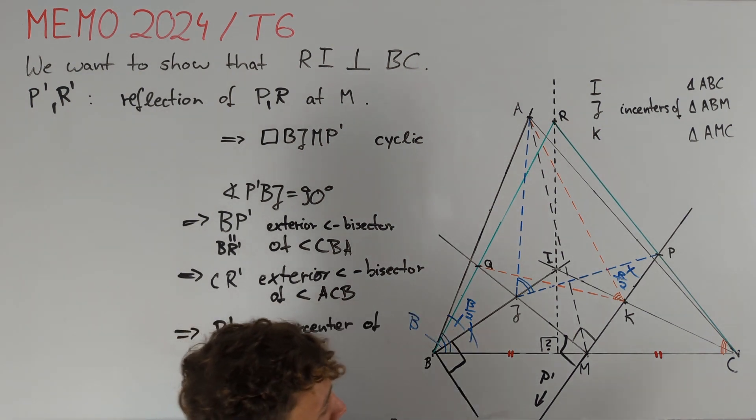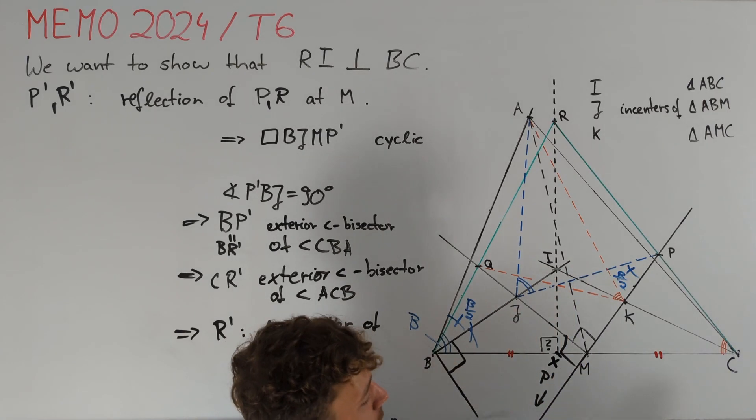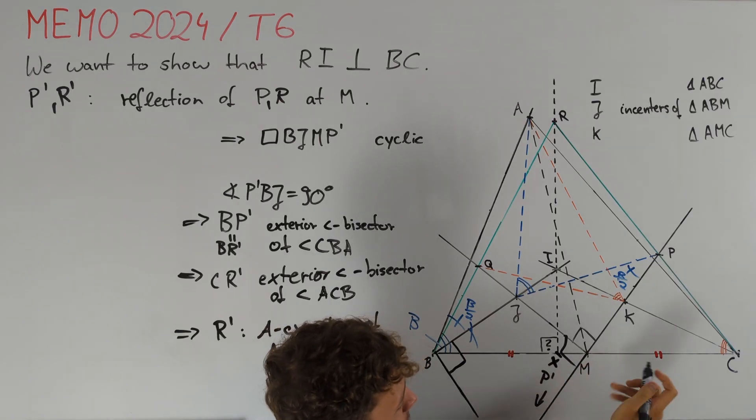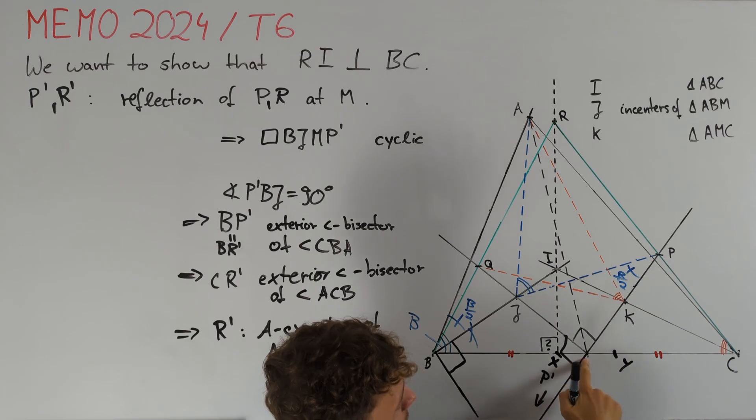At this point, it is left to prove that the projection of the incenter I on BC, which I will call X, and the projection of the A-excenter onto BC, which I will call Y, are just reflections of each other at point M. Notice that points X and Y are just the touching points of the incircle and A-excircle of triangle ABC on side BC.